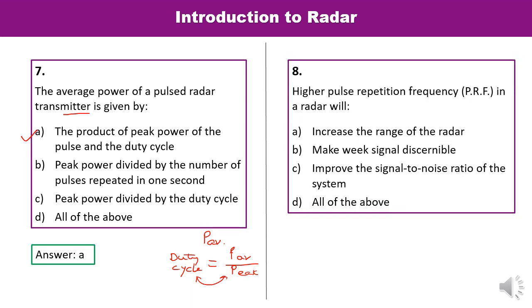Question 8: High pulse repetition frequency (high PRF) in radar will do what? Will it increase the range, make weak signals discernible, improve the signal-to-noise ratio, or all of the above? If PRF is kept very high, it will improve the signal-to-noise ratio. So C is the correct answer.